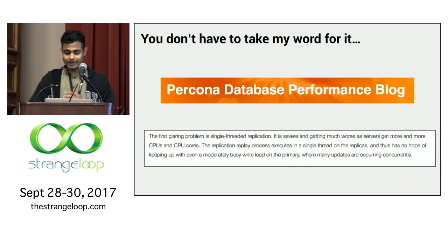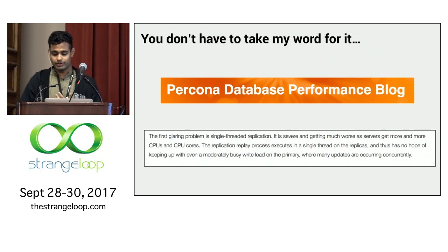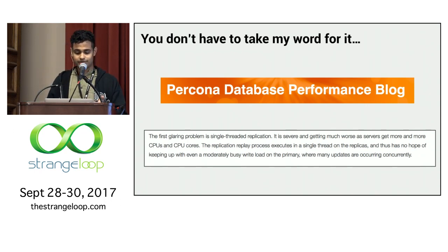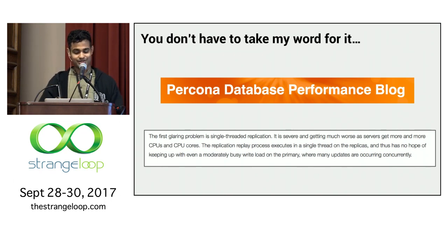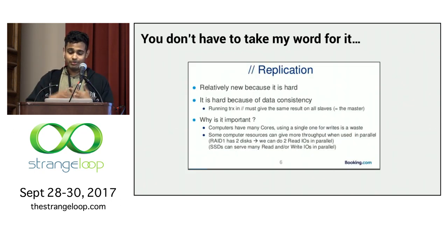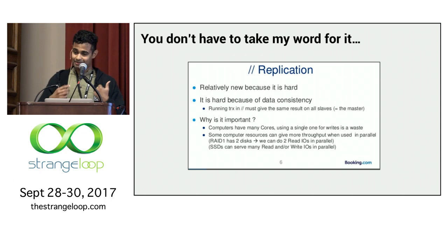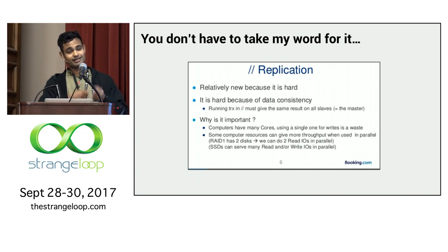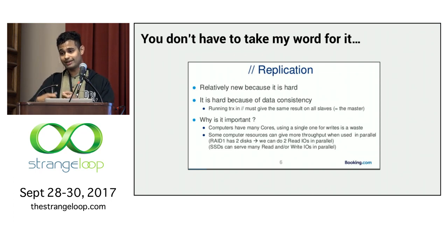Here's an excerpt from a Percona blog post: 'First glaring problem with MySQL is single-threaded replication. It is severe and getting much worse as servers get more and more CPU cores. The replication process executes in a single thread on the replicas and thus has no hope of ever keeping up with the primary, even on a moderately busy workload.' Booking.com also noted that parallel replication is hard because of data consistency — running transactions in parallel, you need identical results on all backups, equivalent to what existed on the primary.